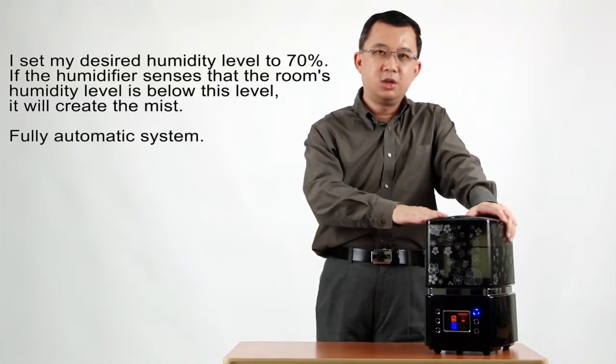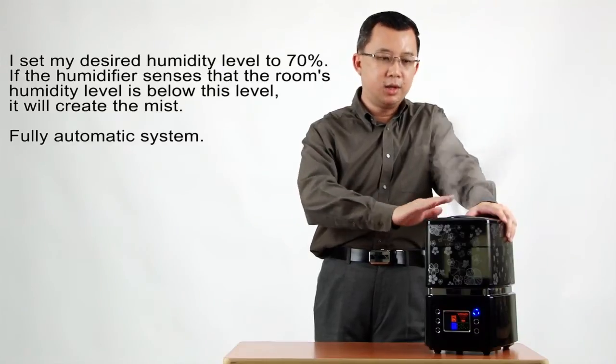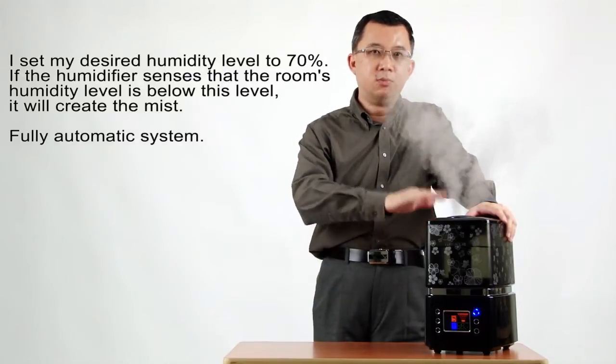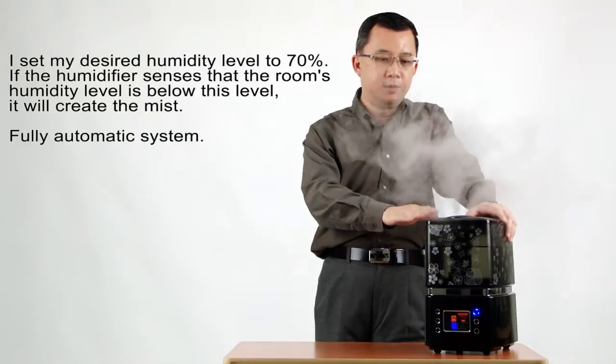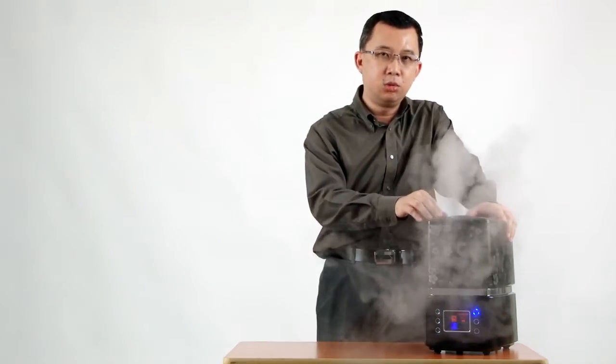So once it senses the humidity level at 70%, it will switch off. And the moment it falls below 70%, it will start producing the mist again. So it is fully automatic.